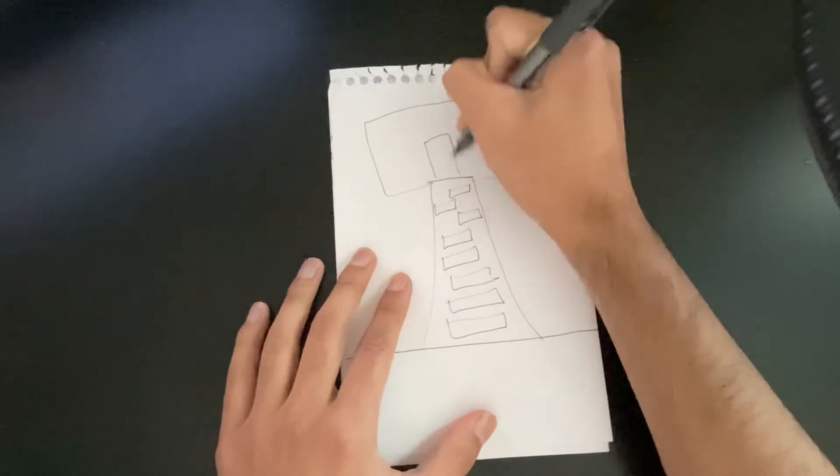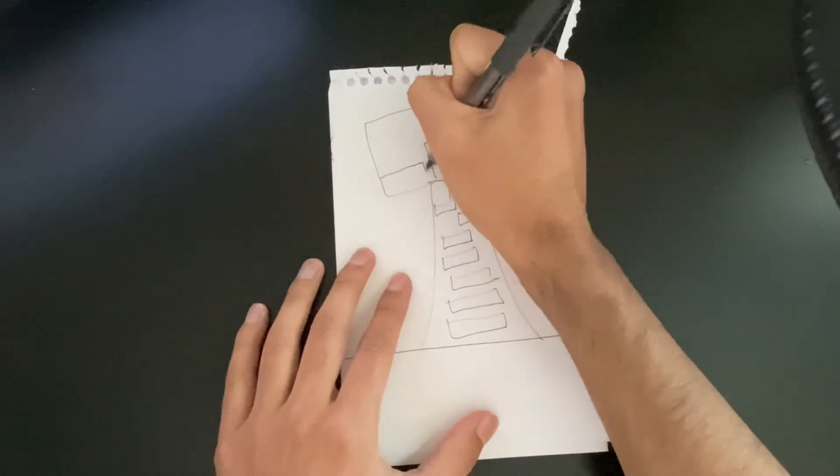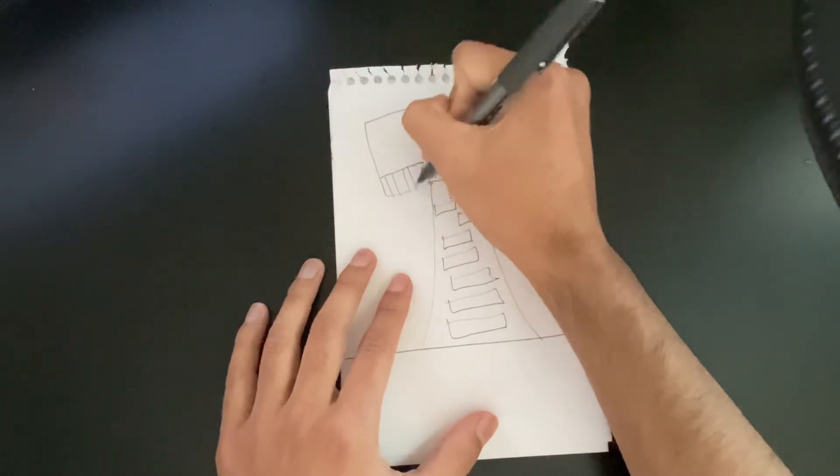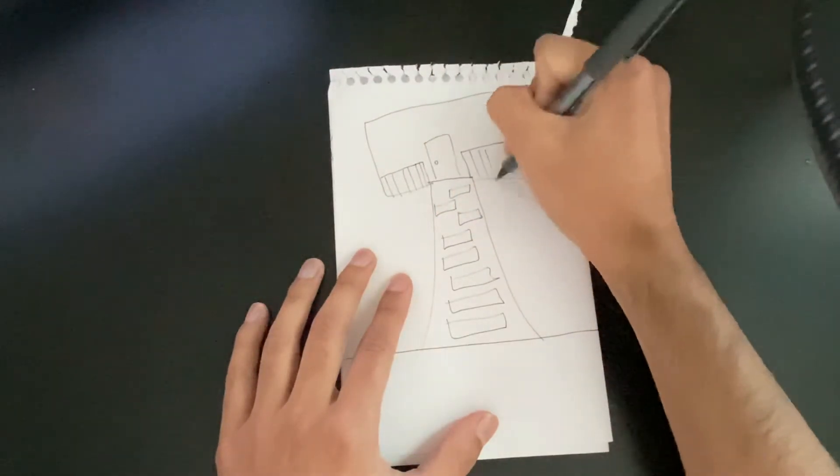I'm going to draw a door into my tree house. I'm going to draw a nice little balcony so that I can hang out outside.